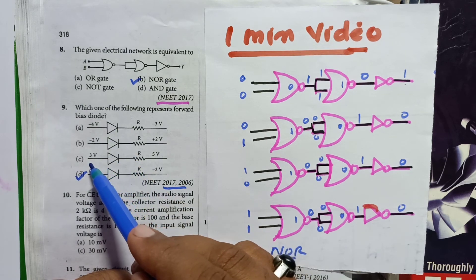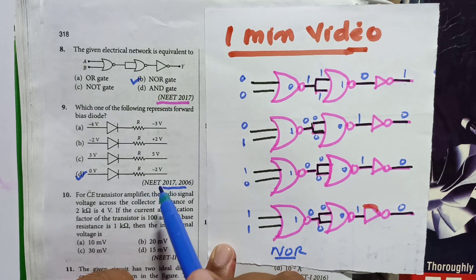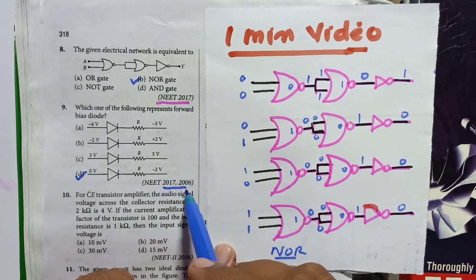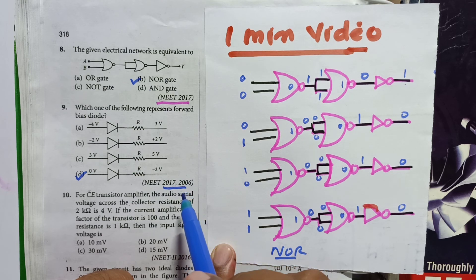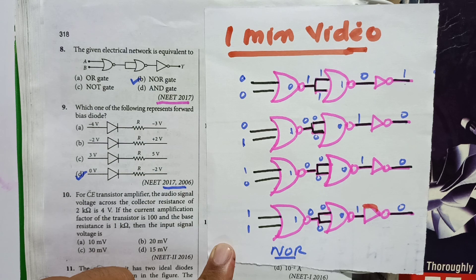Remaining options if you see, input is low and output is high. So it is just one minute video you have learnt two problems. That means 2017, 2020 and 2006. Three repeated problems you have learnt in just one minute. Thank you very much. Have a nice day. Subscribe to my channel, prescribe to your friends and describe the comments below.